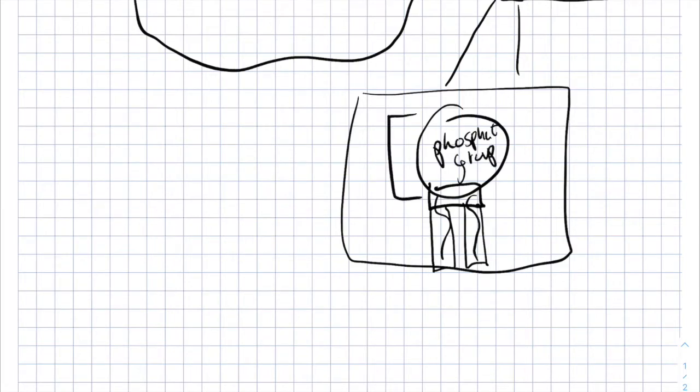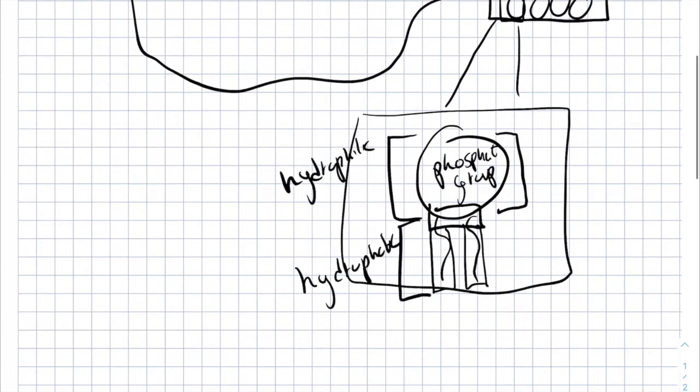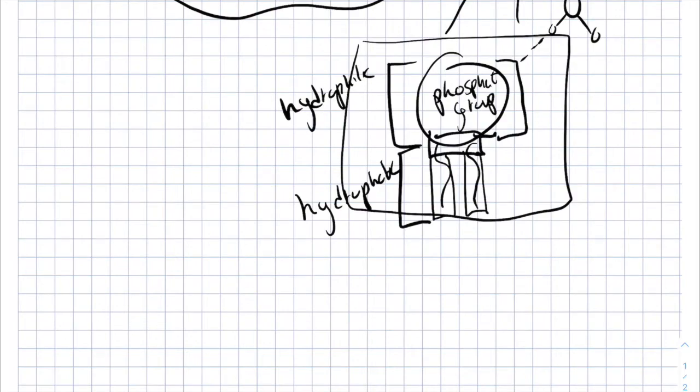This side of the phospholipid is very hydrophilic, and this side of the phospholipid is very hydrophobic. The reason that the phosphate group head is so hydrophilic is because it's charged. So it attracts water molecules, which is the definition of hydrophilic. And the fatty acids are hydrophobic because they don't attract water molecules.